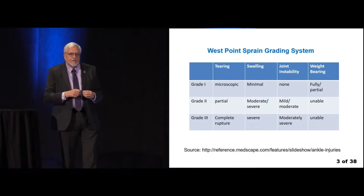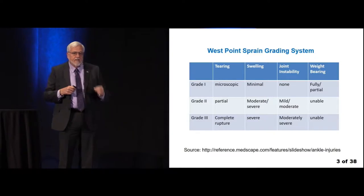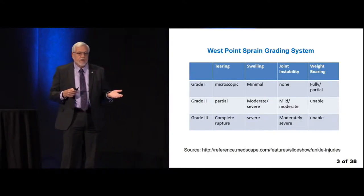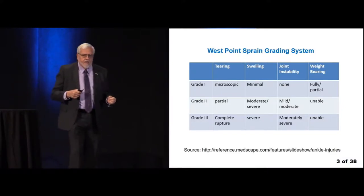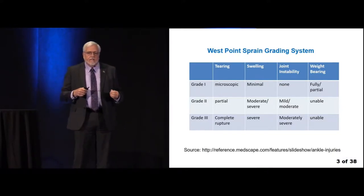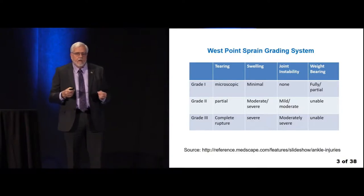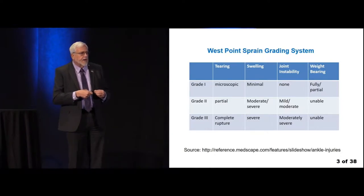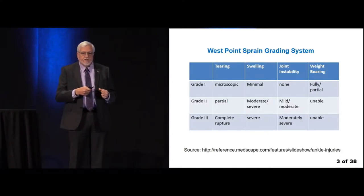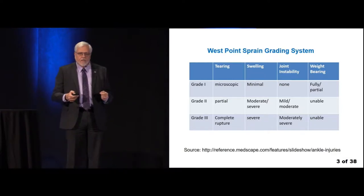This is the West Point sprain grading system, showing grades 1 through 3. Grade 1 involves microscopic tearing, minimal swelling, no joint instability, and the patient is usually fully or partially weight-bearing. Grade 2 is a partial tear with moderately severe swelling, mild-to-moderate joint instability, and the patient is usually unable to weight-bear. Grade 3 is the worst, with complete rupture, severe swelling, moderately severe instability, and the patient is unable to ambulate.